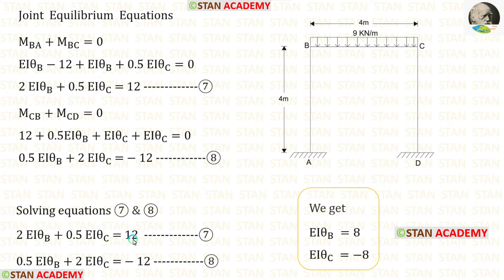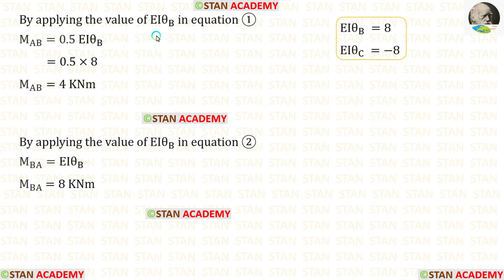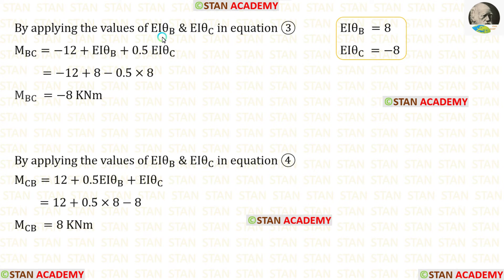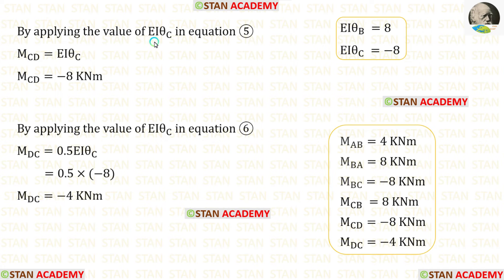Now let us take a calculator and solve these two equations. If you do not know how to solve two equations using a calculator, see the description below — there is a link. Using the calculator, we get the values of EI·theta_B and EI·theta_C. Applying EI·theta_B in equation 1 gives M_AB; in equation 2 gives M_BA. Applying both in equation 3 gives M_BC; in equation 4 gives M_CB. Applying EI·theta_C in equation 5 gives M_CD, and in equation 6 gives M_DC.